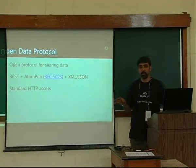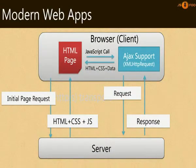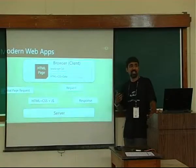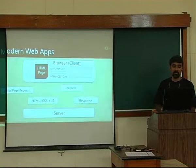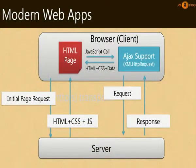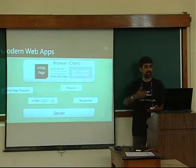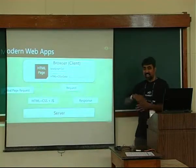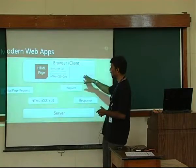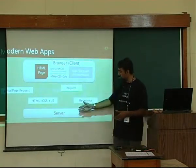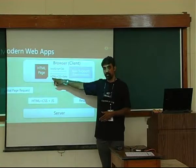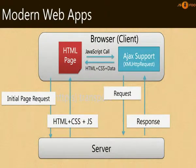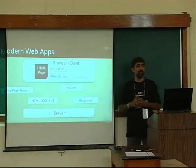Having said this about the open data protocol — all this is available just through HTTP — we're going to see how modern web applications have been built using this data-centric nature. This is how modern web apps work: you have the browser, the HTML page, and the server. The initial page request gets back HTML, CSS, and JavaScript. Afterwards, we use Ajax — a JavaScript call that goes to the server, the server responds with a chunk of data or HTML, and we update the page. This is how the modern web application works nowadays.